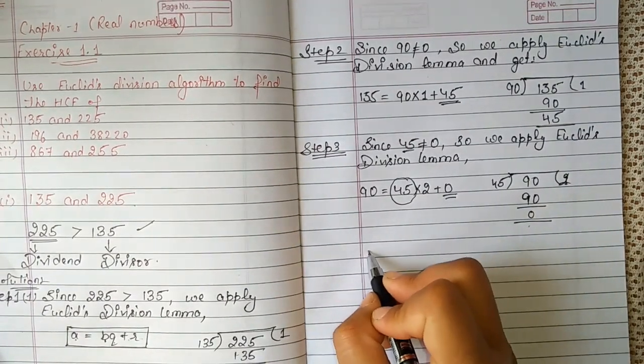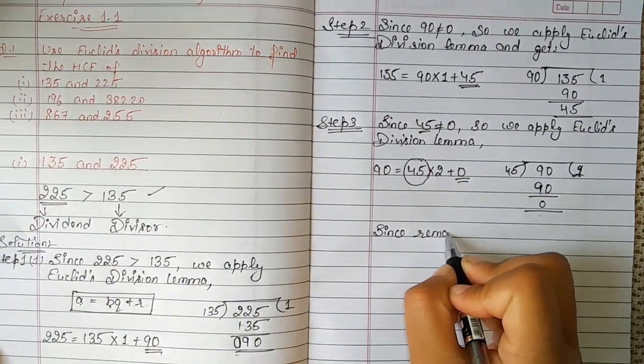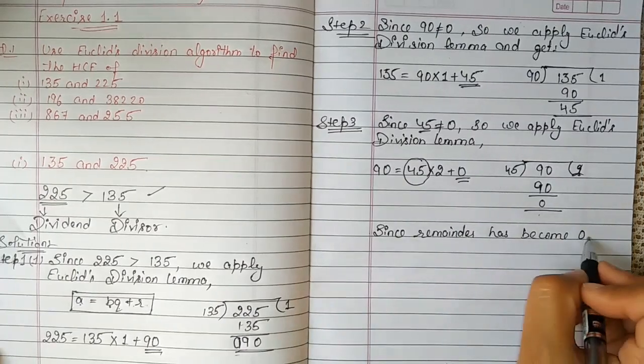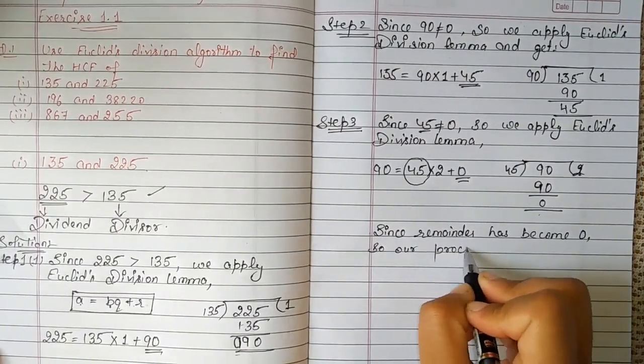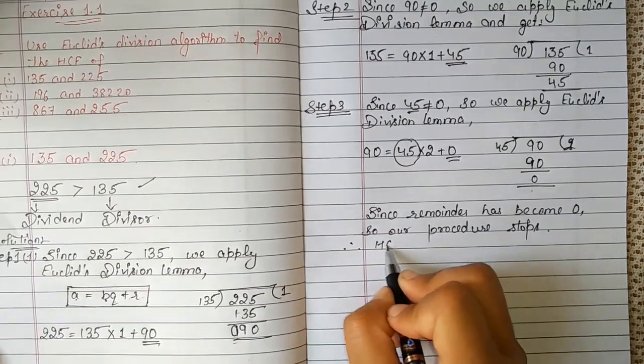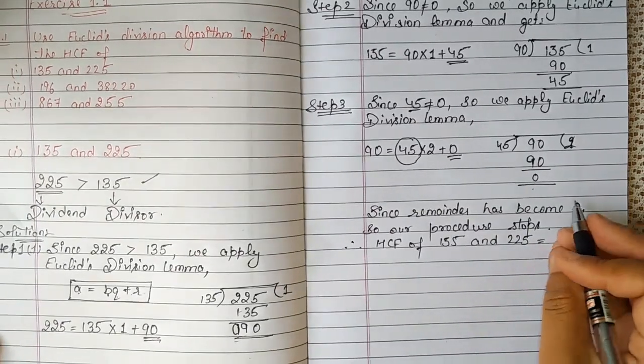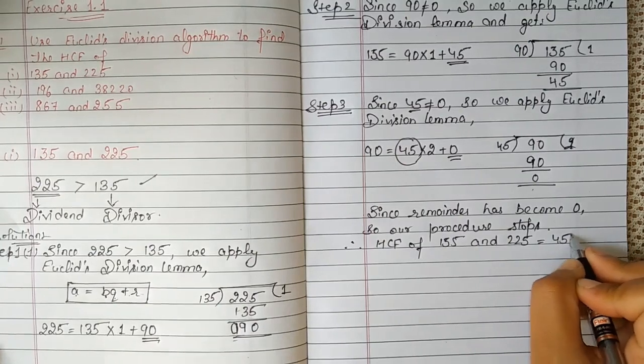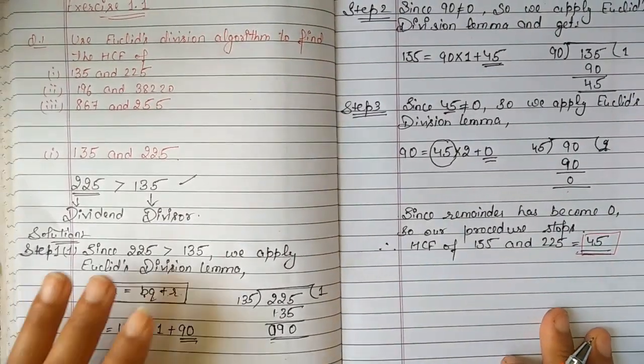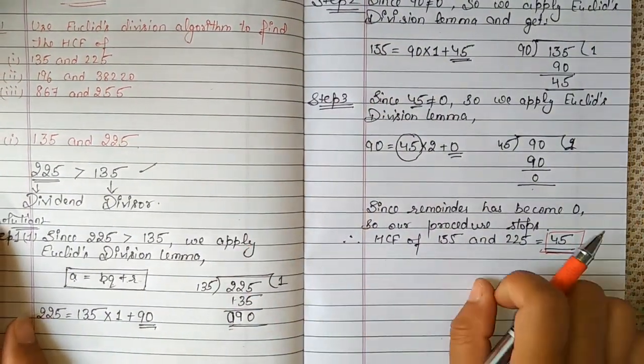So our last step: since remainder has become 0, our procedure stops. Therefore, HCF of 135 and 225 is equal to 45. That is our answer. This example will help you understand so it will be easy to solve the next questions.